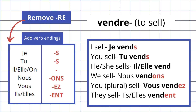Here's the completed conjugation for vendre. Each pronoun has a different ending: je vends, tu vends, il/elle vend, nous vendons, vous vendez, ils/elles vendent. You'll notice that for he or she sells, there is no ending — we don't add an S or ONS, we just remove the RE and leave it as it is.